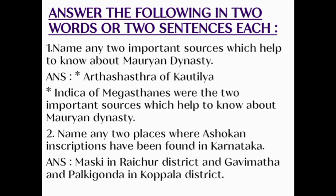Question number 1: Name any two important sources which help to know about Mauryan dynasty. Answer: Arthashastra of Kautilya and Indika of Megasthenes were the two important sources which help to know about Mauryan dynasty.